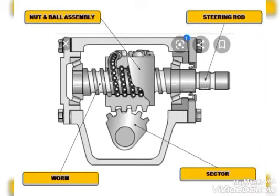In the assembly you can find the worm, nut and ball assembly, steering rod, sector, and pinion with the ball. The nut and ball assembly slides over the worm. Whenever the steering rod is rotated, the worm rotates and the nut and ball assembly moves in a sliding motion, causing the sector to oscillate according to the movement of the nut and ball assembly.